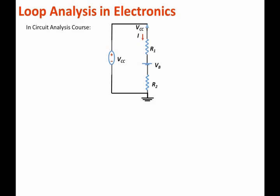The current enters the top of R2, so by Ohm's law the plus polarity is on top, and we add the voltage across R2. Writing the loop equation as studied in circuit analysis courses gives: minus Vcc plus I·R1 plus Vb plus I·R2 equals 0. That is the standard way to write loop equations from circuit courses.